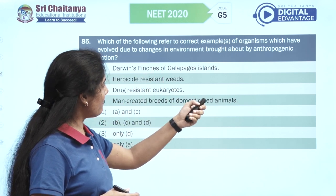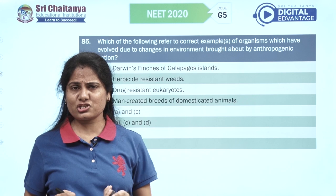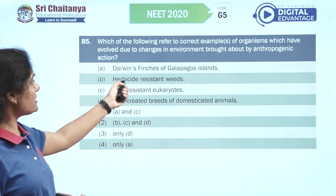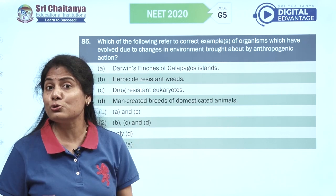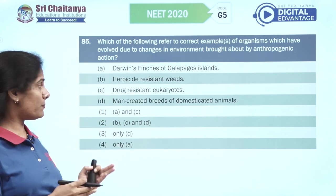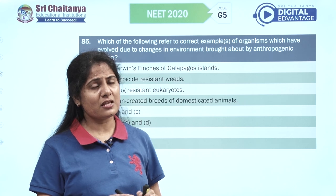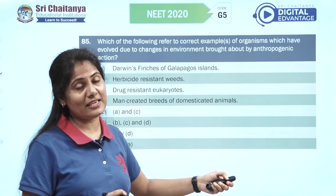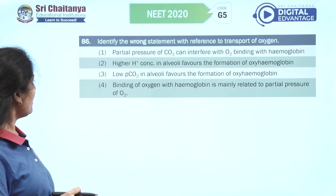Which of the following refers to correct examples of organisms that evolved due to changes in environment brought about by anthropogenic action? Darwin's finches of Galapagos Islands — rule that out, it's not due to anthropogenic action. Herbicide-resistant weeds — yes. Drug-resistant organisms — also right. Man-created breeds of domesticated animals — not the best option. We are left with B, C, and D, and hence option two.